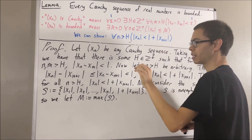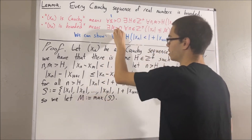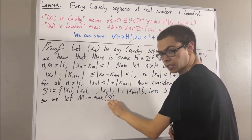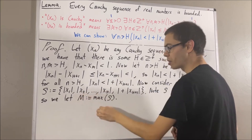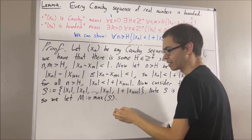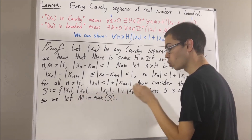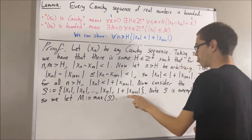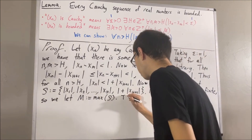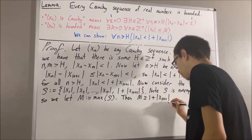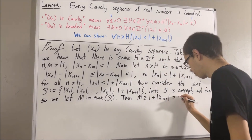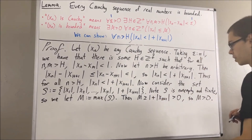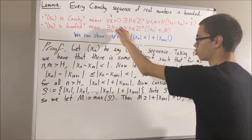To show that, we first need to confirm that our choice of capital M is greater than zero. Capital M is the largest element of S, which means capital M is greater than or equal to every element in S. So in particular, capital M must be greater than or equal to 1 plus the absolute value of x_{h+1}, and we know that this is greater than zero. So capital M is greater than zero.